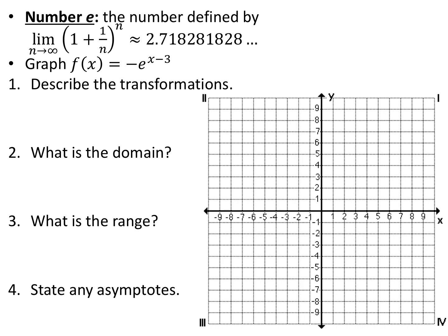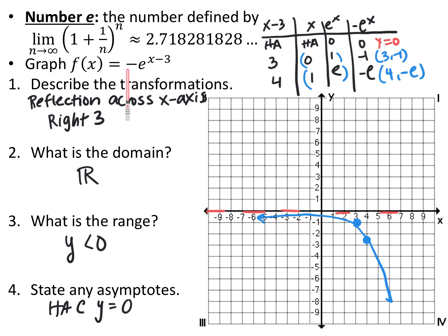We can do all of our transformations on graphs with e just like before. The parent function is e to the x. The negative in front is a reflection across the x-axis, and x minus 3 shifts it to the right 3. Using the table, I add 3 to all x-coordinates to shift right, then multiply all y-coordinates by negative 1 to reflect across the x-axis. The horizontal asymptote stays at y equals 0. The point originally at (0, 1) is now at (3, negative 1), and the point originally at (1, e) is now at (4, negative e) — about negative 2.7. Domain is all real numbers, and because of the reflection across the x-axis, the range is y is less than 0.